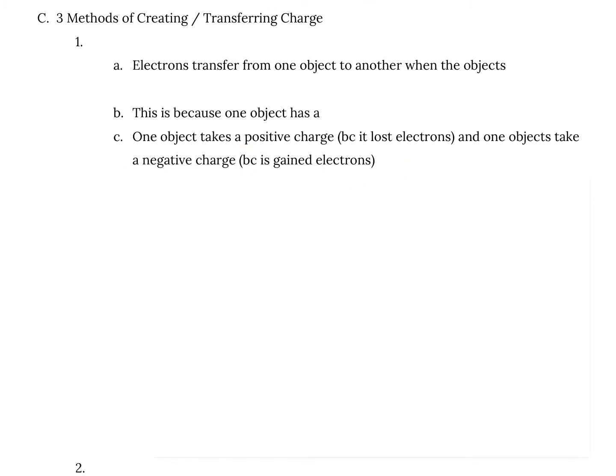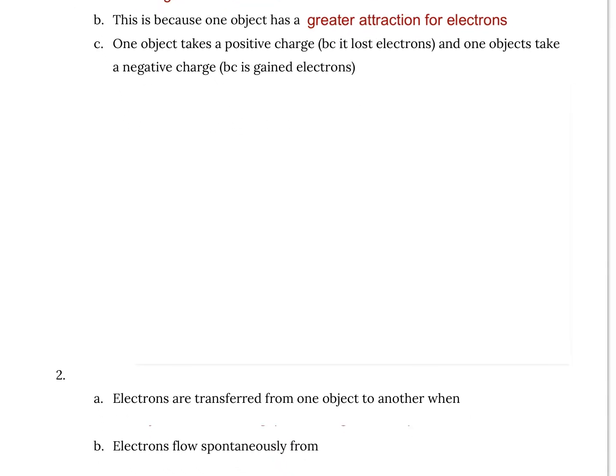There are three different methods that an object can use to become charged. The first method is called friction. In friction, electrons transfer from one object to another when they rub against one another — there must be some type of movement involved. This happens because one object has a greater attraction for electrons than another. In the end, one object takes a positive charge and the other takes a negative charge.